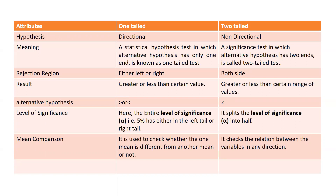Comparing by attributes: in a one-tailed test, the hypothesis is directional — either on the positive side or the negative side, using a greater-than or lesser-than sign. In a two-tailed test, the hypothesis is non-directional — there is no specified direction. A statistical hypothesis test in which the alternative hypothesis has only one end is known as a one-tailed test. A significance test in which the alternative hypothesis has two ends is called a two-tailed test.